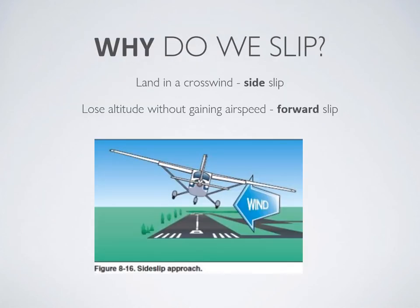So why do we slip? Two main reasons. One is to maintain directional control while landing in a crosswind, and the other is to lose altitude without gaining airspeed, such as in a forward slip.